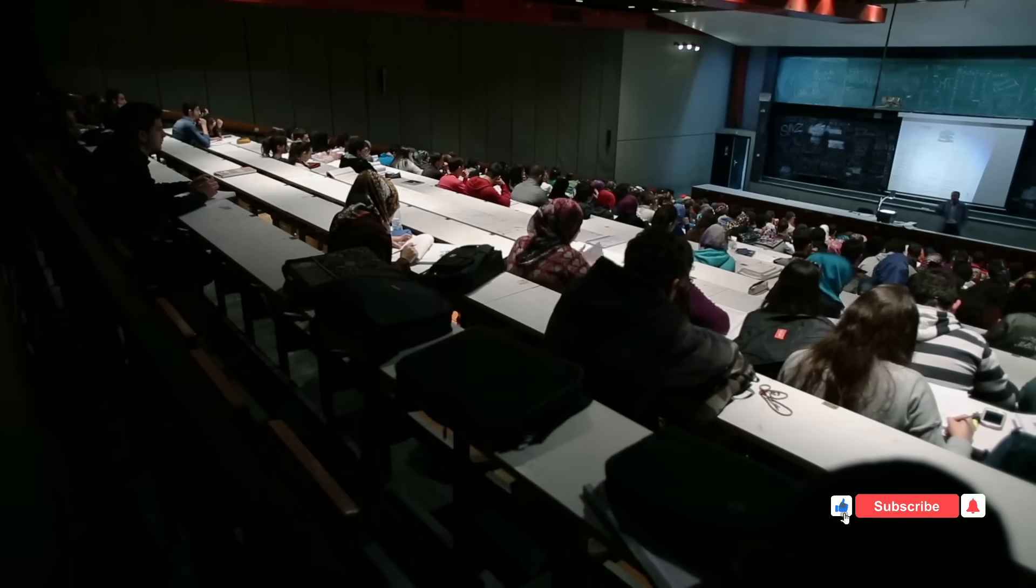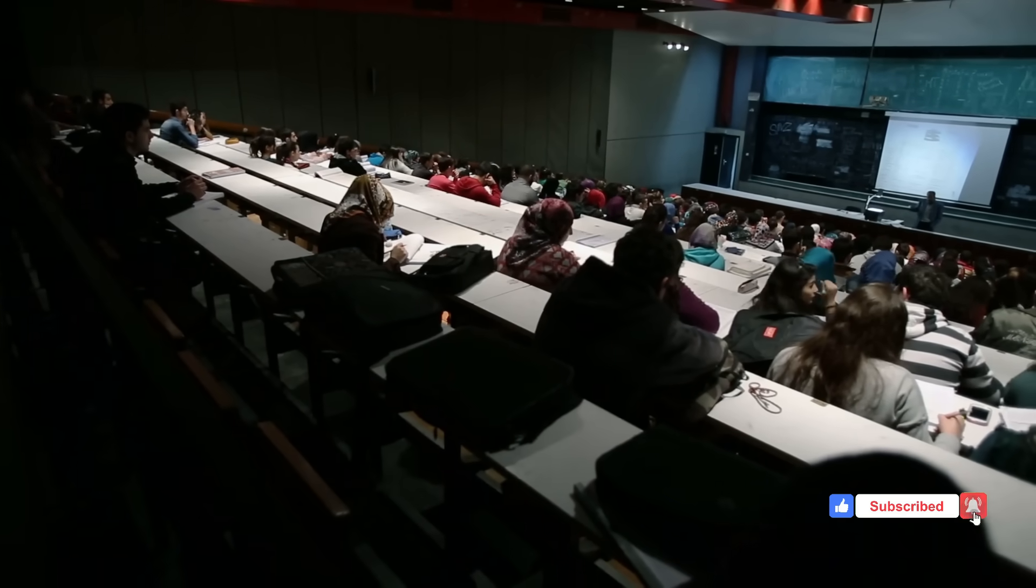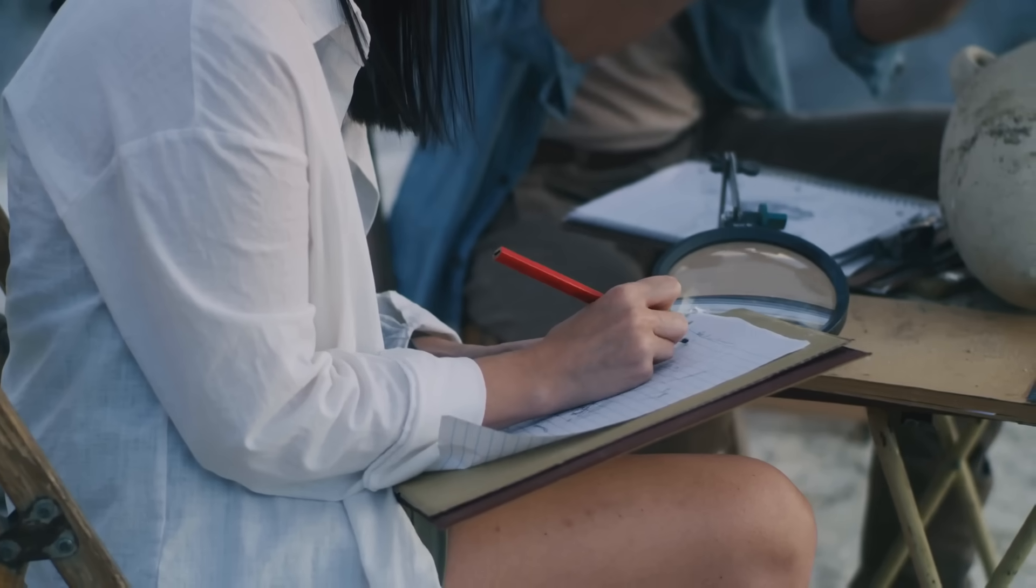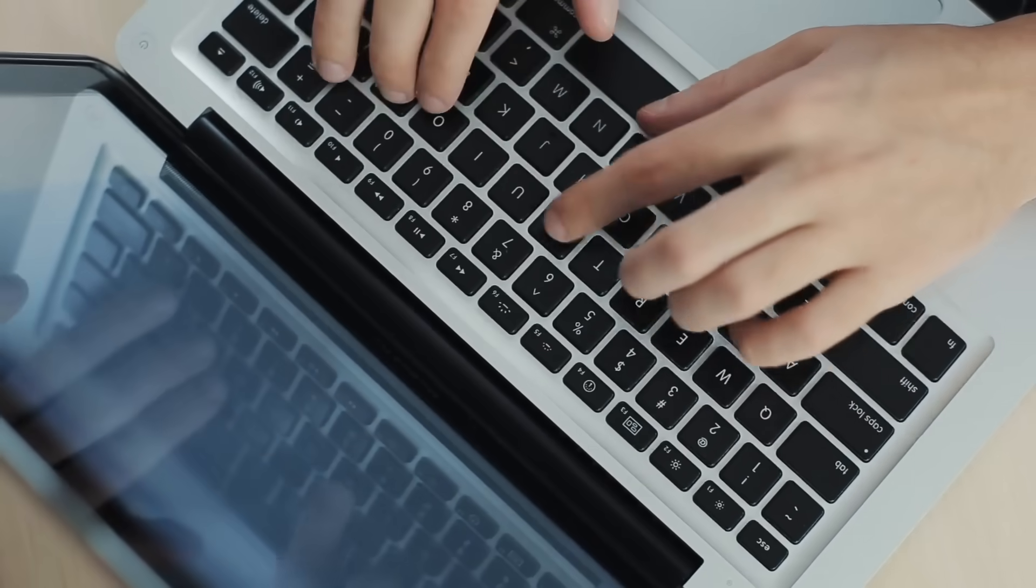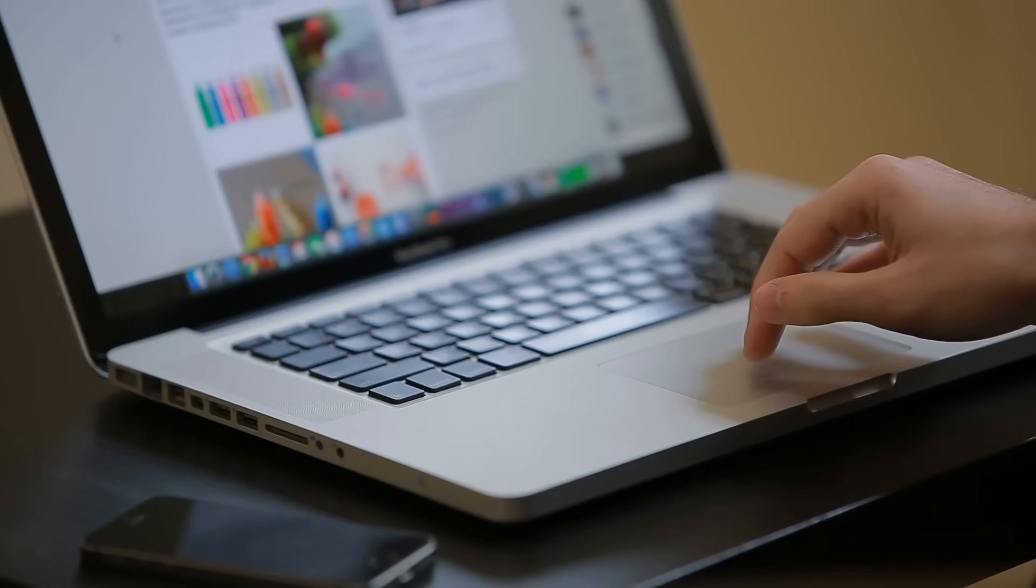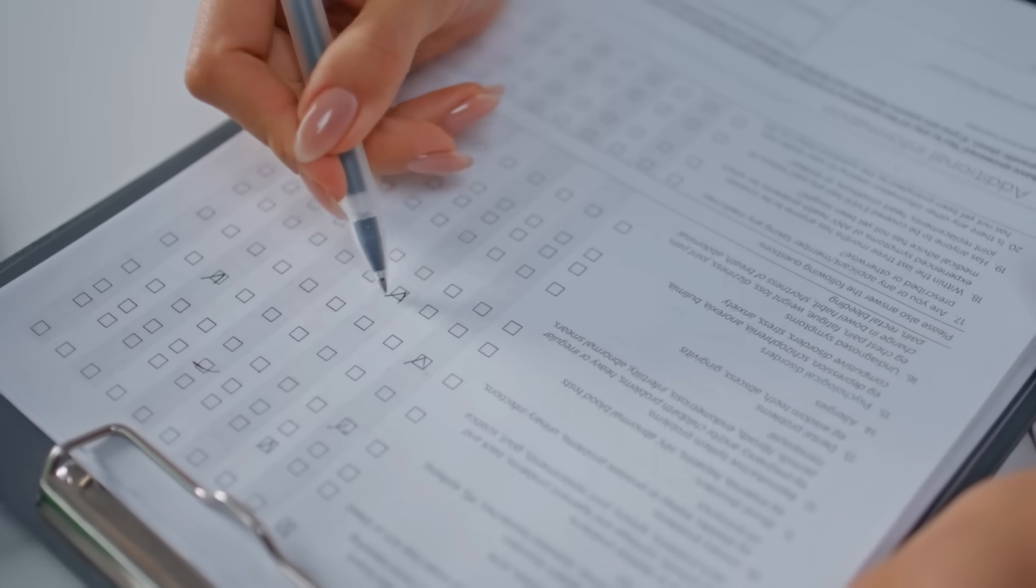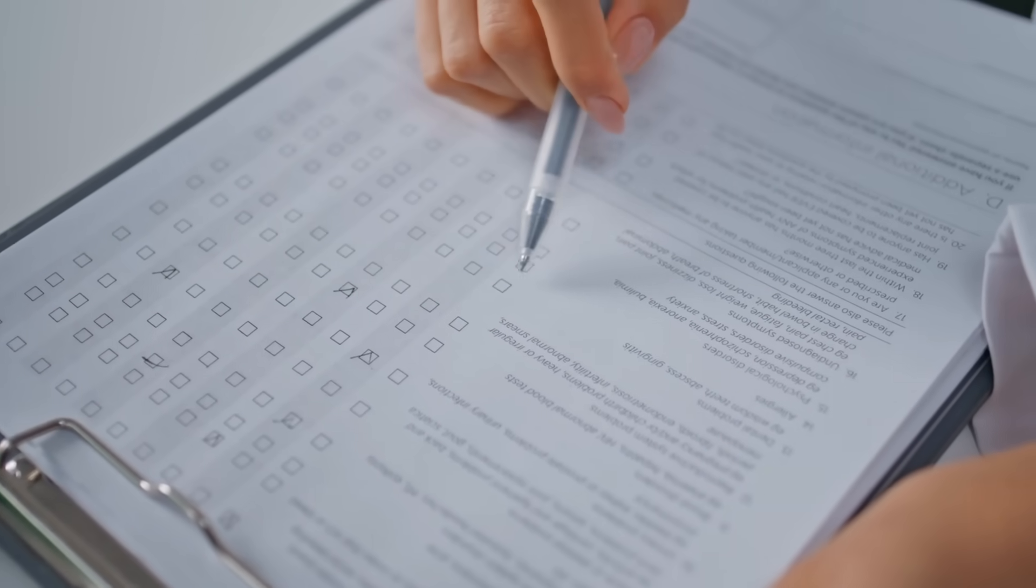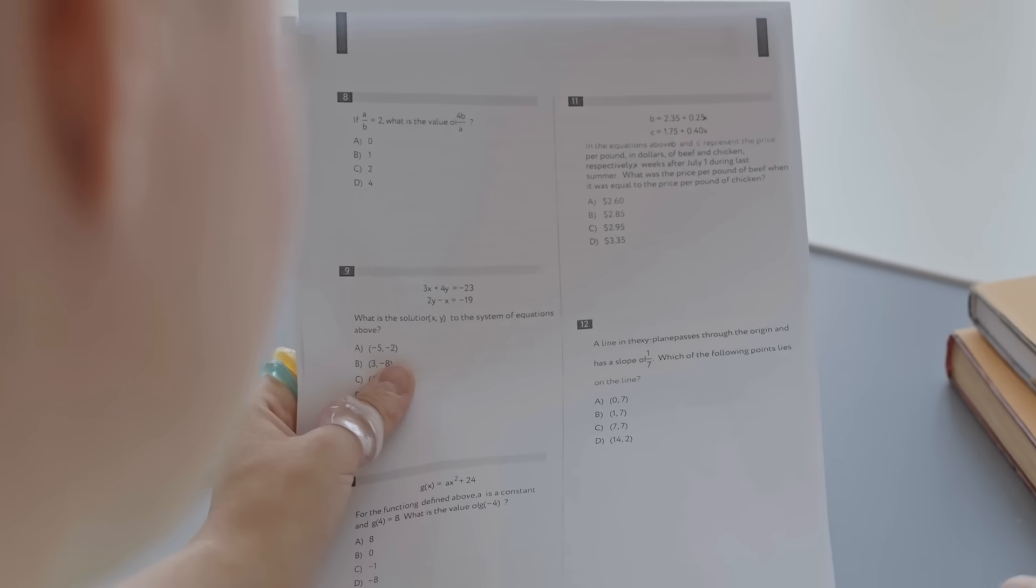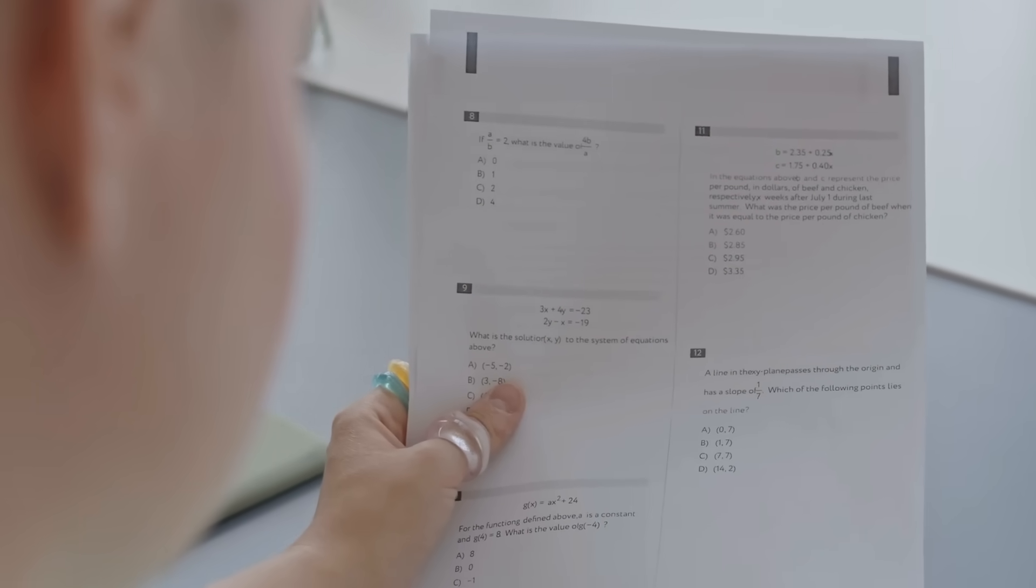Studies from Princeton and UCLA tested students learning the exact same material. Half typed notes, half wrote by hand. The laptop users wrote more. Their notes were longer, more detailed, more complete. Yet when tested on conceptual understanding, they scored 20% lower. 20% worse, despite having better notes.